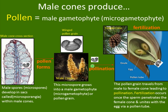The wind carries them and pollination occurs inside the female cone. The pollen grain travels from male to female cone, leading to pollination. Fertilization occurs once the sperm penetrates the female cone and unites with the egg via a pollen tube. The male gametophyte grows a pollen tube that penetrates inside the egg and delivers the sperm. The sperm then fertilizes the egg, making a seed, and that seed is surrounded by an ovule.